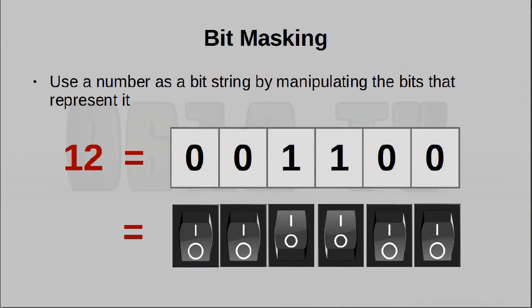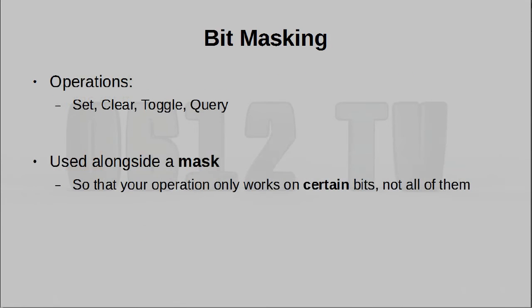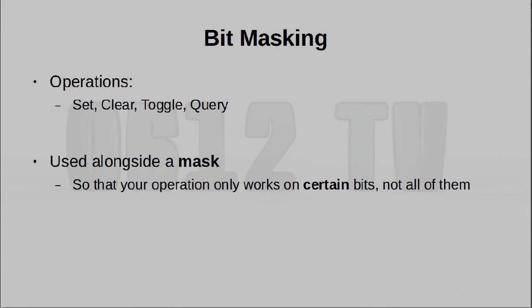Using these operations strategically in a programming language allows us to use a number as a bit string. This is called bit masking, and there are actually four operations you can perform. All these operations involve creating a mask, which will of course only apply whatever change it is you want to apply to the particular bits you want to change. Everything else will remain untouched.